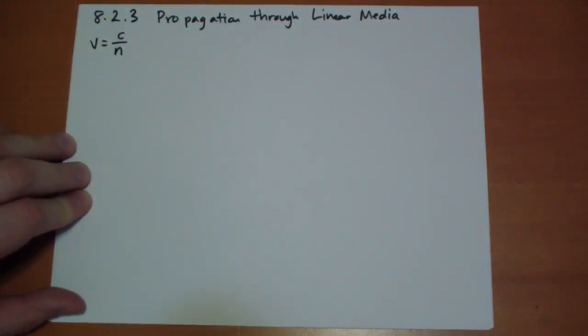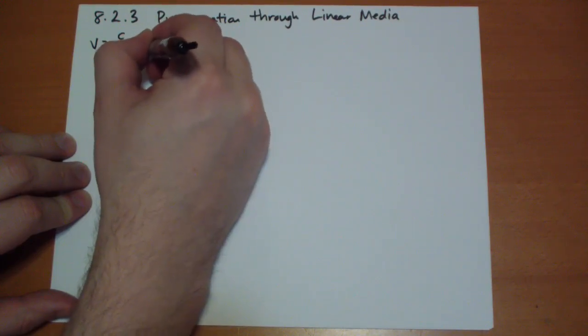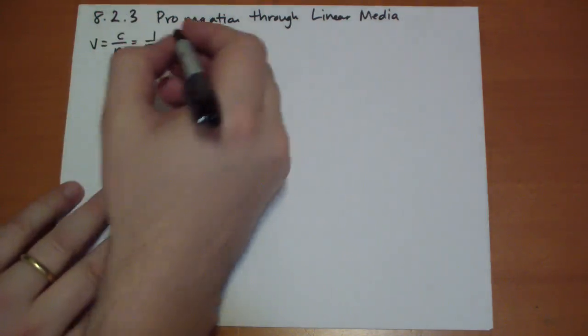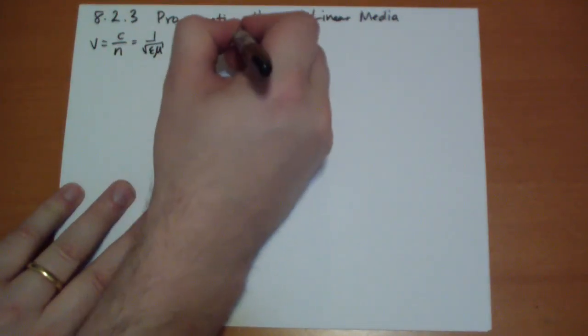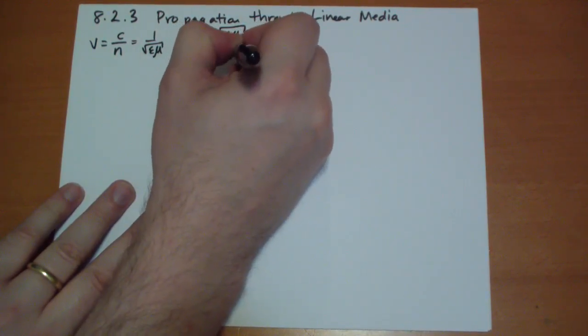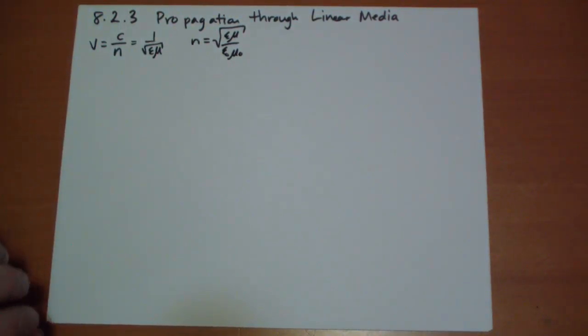And that is equal to 1 over epsilon mu of the linear media. And so our n that we use for Snell's law is just the square root of epsilon mu over epsilon not mu not. So the permittivity and permeability of the media determines our index of refraction.